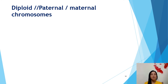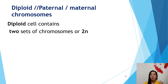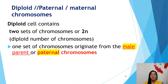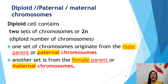Diploid cells contain two sets of chromosomes, or we call it 2n. One set of chromosomes originates from the male parent, our father — we call it the paternal chromosome. Another set of chromosomes comes from the female parent, our mother — we call it the maternal chromosome.